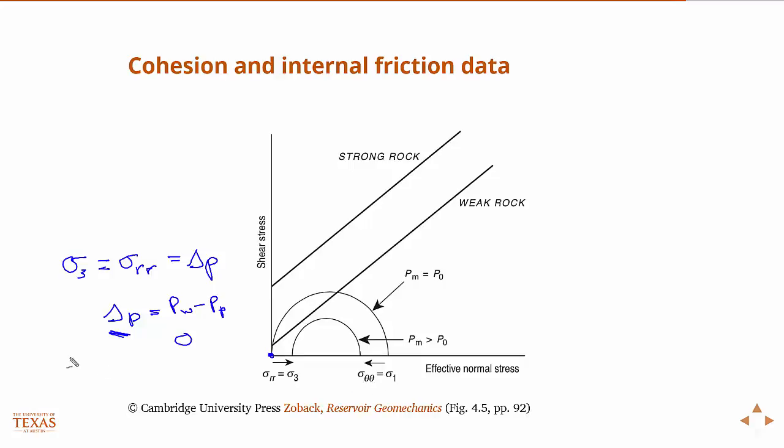The primary principal stress one, the highest principal stress in the wellbore is typically the hoop stress, sigma theta theta. The maximum principal stress in the wellbore is the hoop stress. This is the circumferential stress around the wellbore wall. It's going to be out here somewhere.